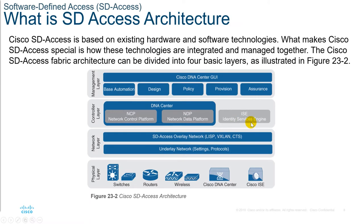The Cisco Identity Services Engine, or ISE, is a secure network access platform enabling increased management awareness, control, and consistency for users and devices accessing the organization's network. ISE is an integral and mandatory component of SD-Access for implementing network access control policy, performing policy implementation, and enabling dynamic mapping of users and devices to scalable groups. You can track the users and their devices — that is a cool feature integrated into the SD-Access architecture.